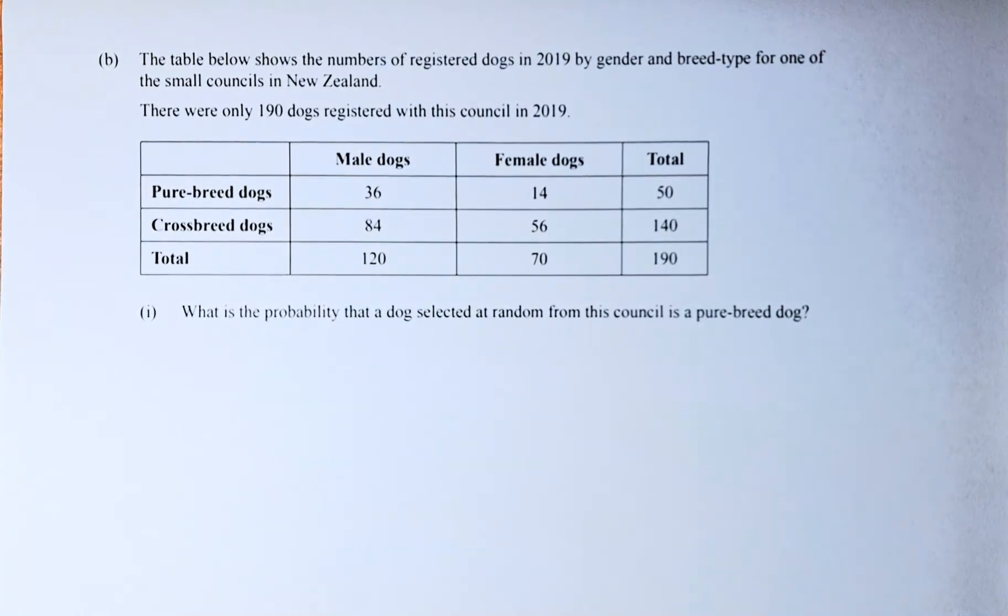Good day! In this video, we are looking at question 2B of the 2021 NCA chance and data paper. Altogether, there are three parts in this question 2B. The first part is an achieve, the second and third part are merit questions. So without further ado, let's read the question.